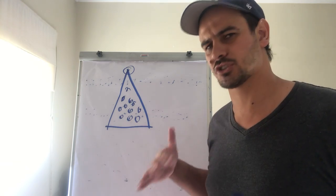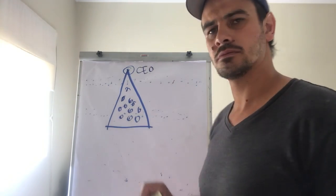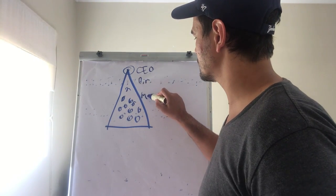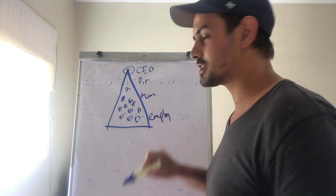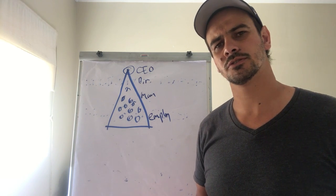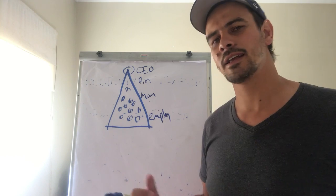...that the corporate companies are structured where you're sitting with your CEO, you're sitting with your directors, you're sitting with your managers and then you're sitting with your employees which is 90 percent of people that work for a boss.